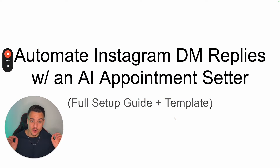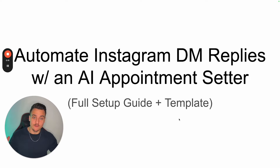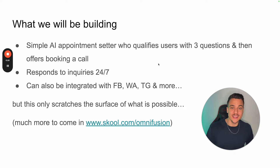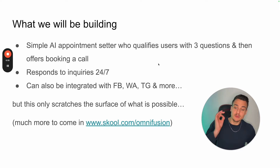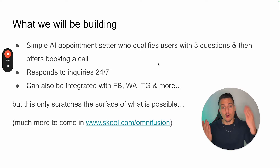Alright, I hope you're ready to start automating your Instagram DM replies with an AI appointment setter because I'm about to walk you through the full guide, provide you with the templates, and show you how to set everything up. What we are going to be building is, in comparison to what we do at the agency, a very simple AI appointment setter that qualifies users by asking three questions and then offers to book in a call. Based on their response, we're either going to send them the link to book a call or give them a backup offer and send them the link to our community.